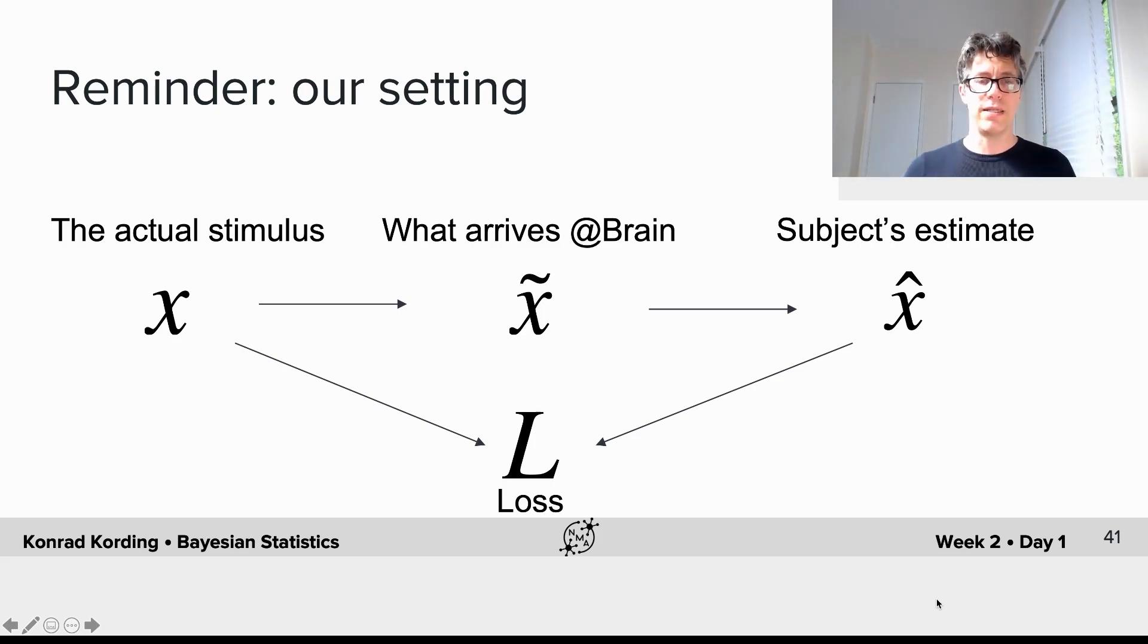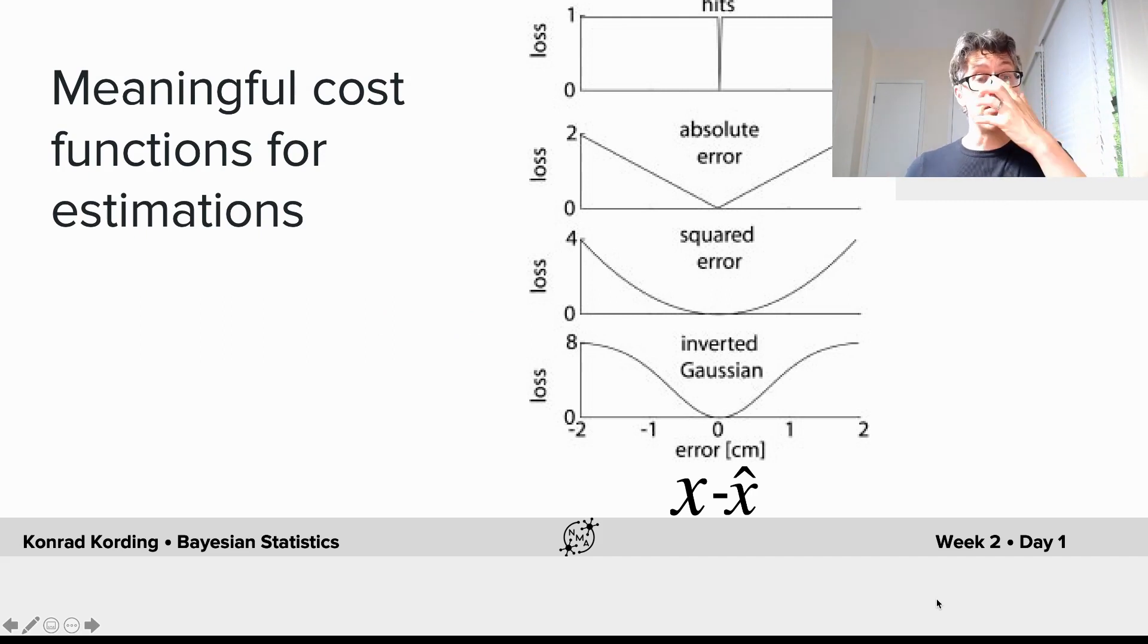The loss for the subject—when we ask people to reveal their estimate—depends on the difference between the actual stimulus and the subject's estimate. What cost functions could people care about? The zero-one loss function: perfect gets a point, otherwise lose a point. Absolute error: twice the error is twice as bad. Squared error: twice the error is four times as bad. Or some arbitrary other function.